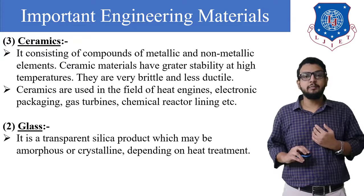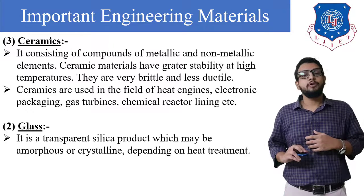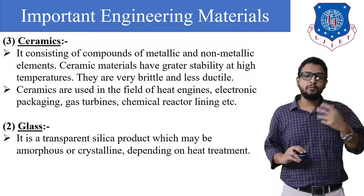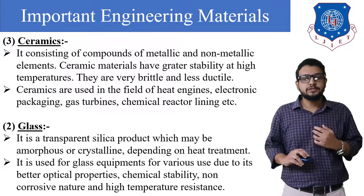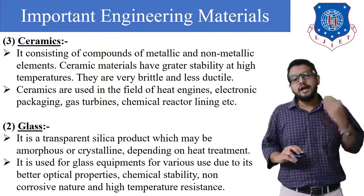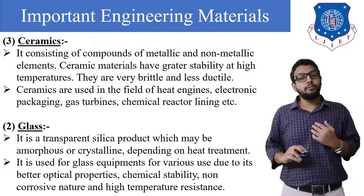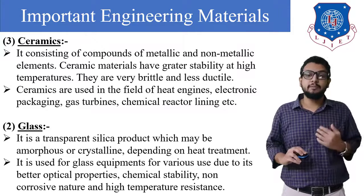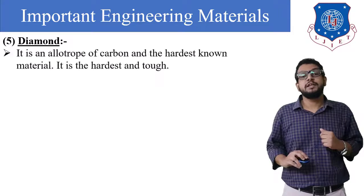The next material is glass. It is a non-metallic material made from transparent silica, which may be amorphous or crystalline depending on heat treatment. A well-known property of glass is its brittleness. It is used for glass equipment due to its better optical properties, chemical stability, non-corrosive nature, and high temperature resistance.